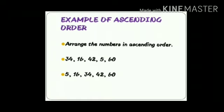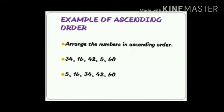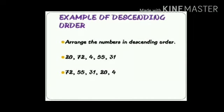After 5, the remaining numbers are 34, 16, 42, and 60. From these four numbers, the smallest is 16, then 34, then 42, and at last 60 — the biggest number. So children, this is how we arrange numbers from small to big in ascending order.